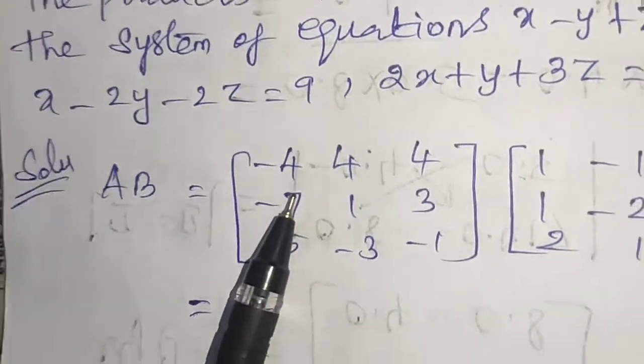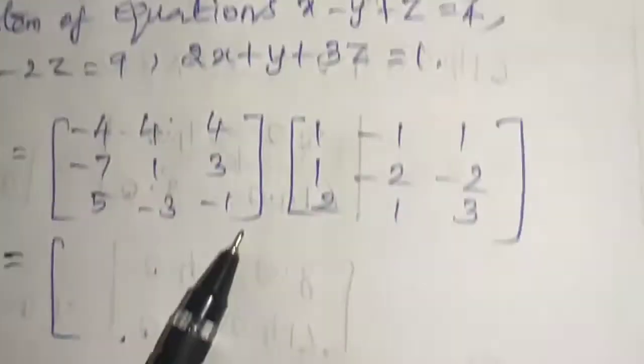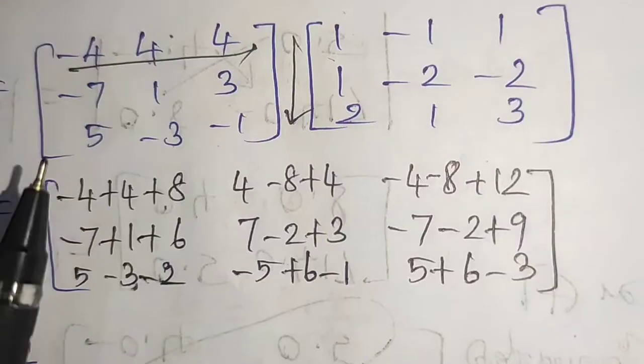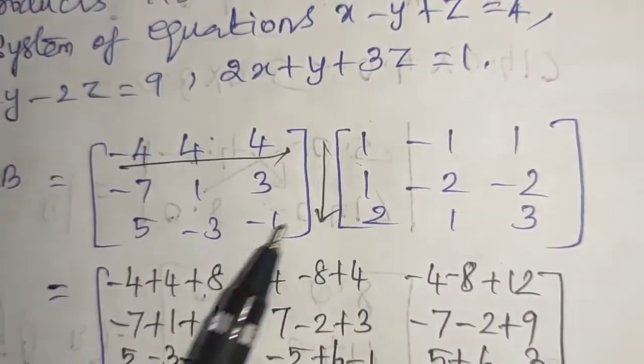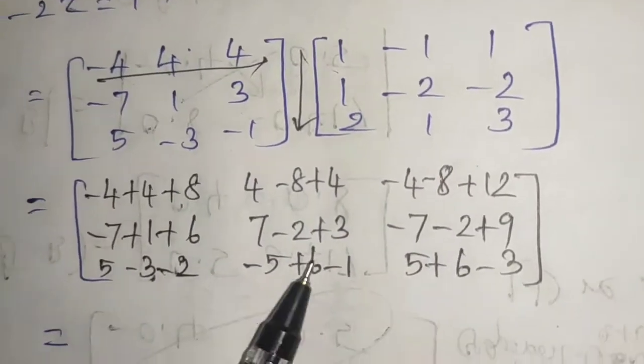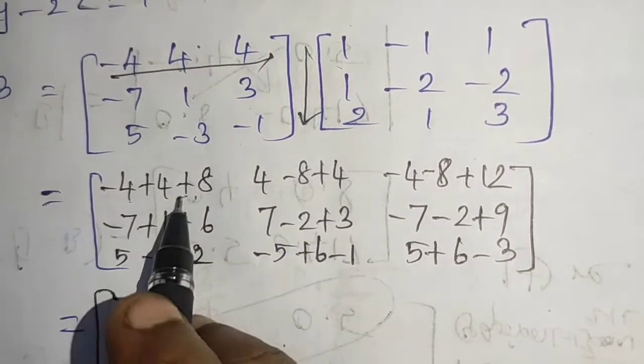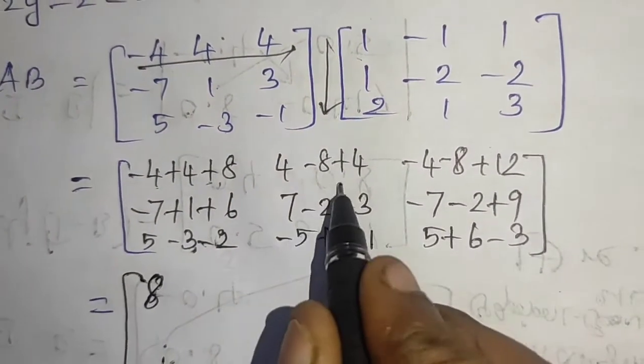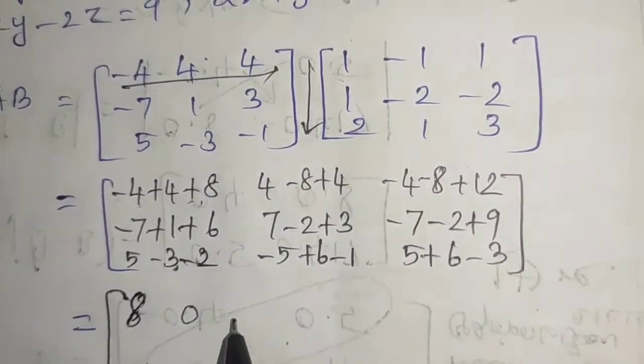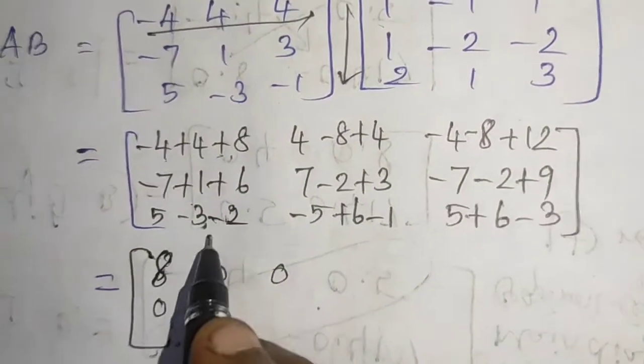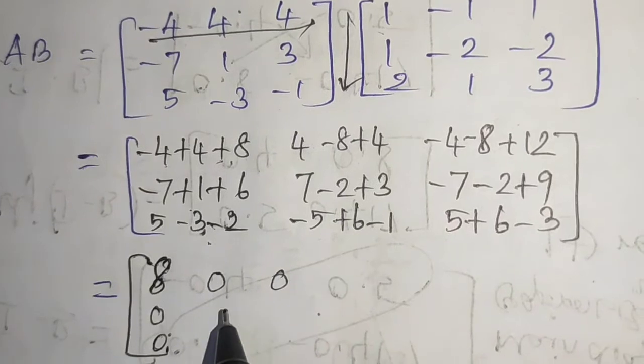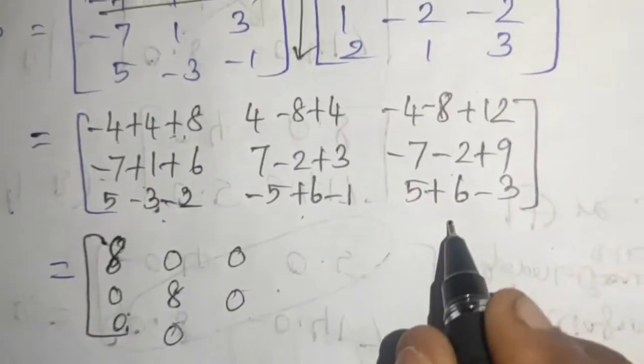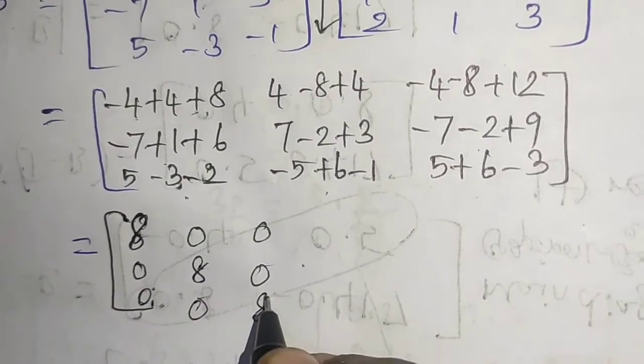AB is equal to the matrix. Multiply row into column for matrix multiplication. First one: minus 4 plus 4, so we get 8. Second one: 8 minus 8, that's 0. 12 minus 12 is 0. 7 minus 7 is 0. 10 minus 2 is 8.